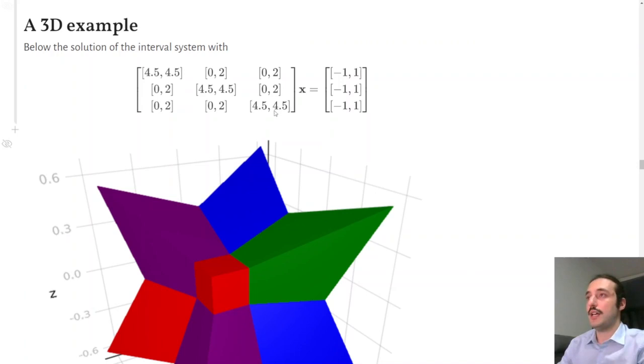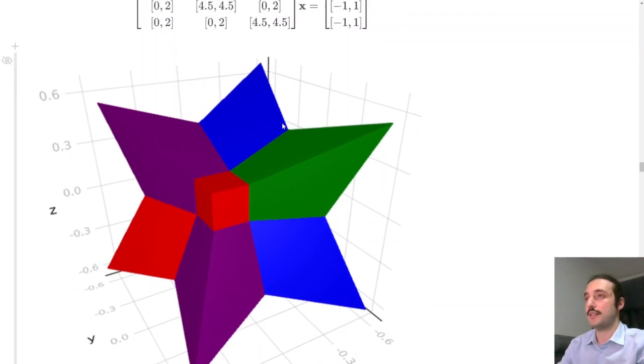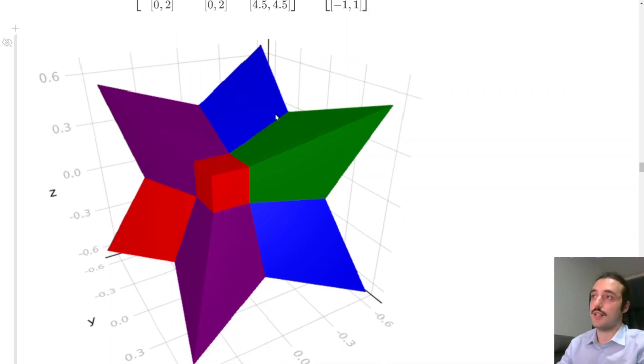Here we have a 3D example. We try to solve this 3D linear system of interval equalities, and that's the solution set that we get. Again, this 3D non-convex star composed by eight convex polytopes, one for each quadrant.